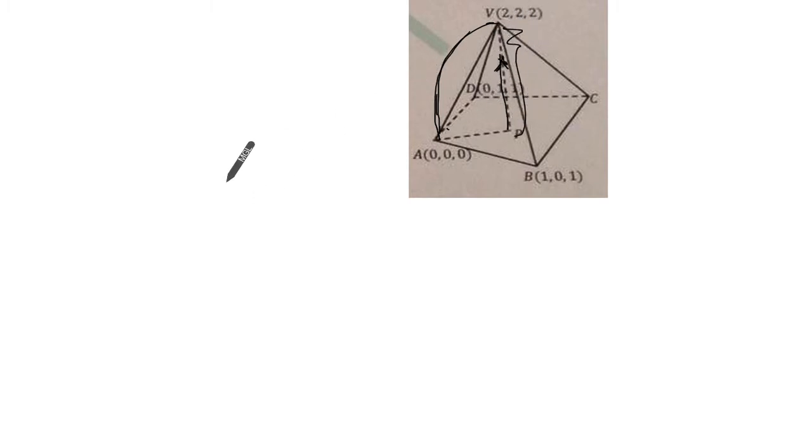There's VA. If I knew this direction, I can find out this vector's component on this direction, which is going to be exactly this length here. So the key is to find this direction.